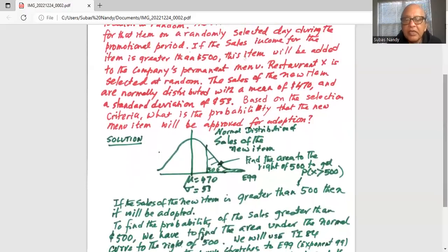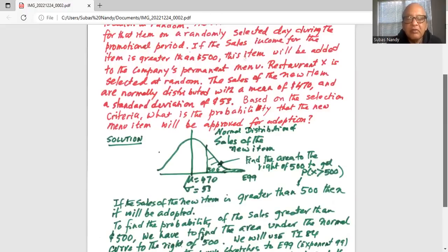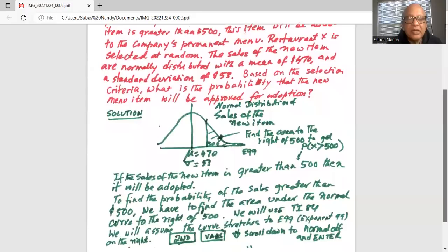If the selected new item is greater than $500, then it will be adopted. To find the probability of the sales greater than 500, we have to find the area under the normal curve to the right of 500. We will use the TI-84 calculator for this. We will assume the curve stretches to E99, which is exponent 99, or 1 followed by 99 zeros, which is a very large number on the right-hand side.